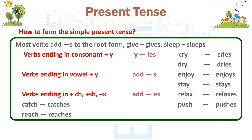3. Adding s: Most verbs add s to the root form — give → gives, sleep → sleeps. Verbs ending in consonant + y change y to ies — cry → cries, dry → dries. Verbs ending in vowel + y add s — enjoy → enjoys, stay → stays. Verbs ending in s, ch, sh, or x add es — relax → relaxes, catch → catches, push → pushes, reach → reaches.